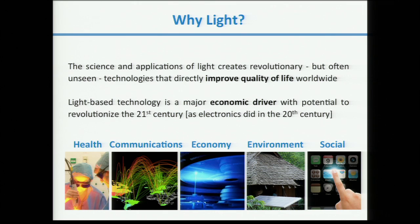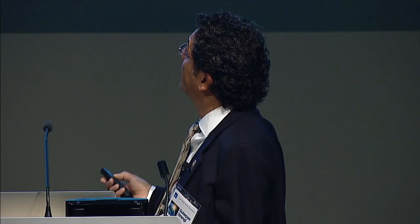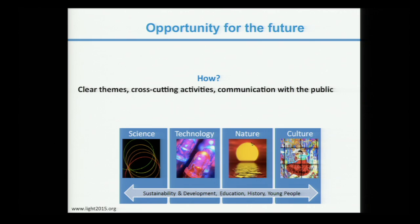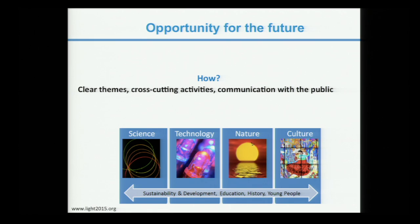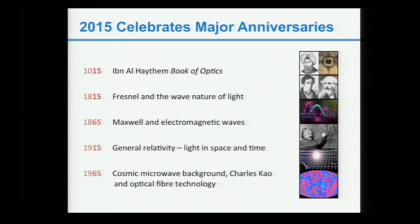These technologies will revolutionize this century in the same way in which electronics did for the last century. But we need to take this opportunity. In order to do that, we need to define clear themes and cross-cutting activities. We need to communicate with the public in order to have these cross-cutting activities going from science to technology. And this is not a simple step — it's a very difficult step. Tech transfer is not easy, but we have to put all our efforts in order to do that.